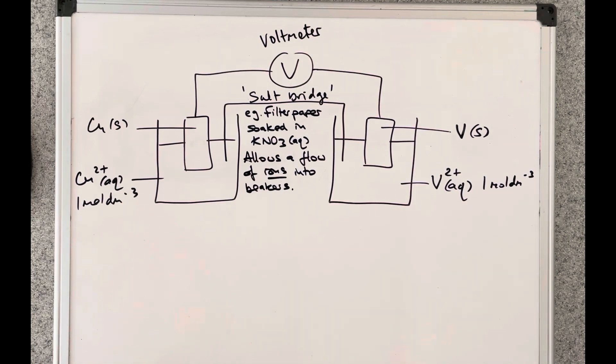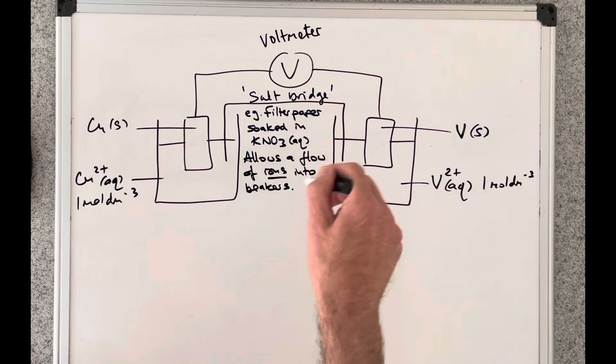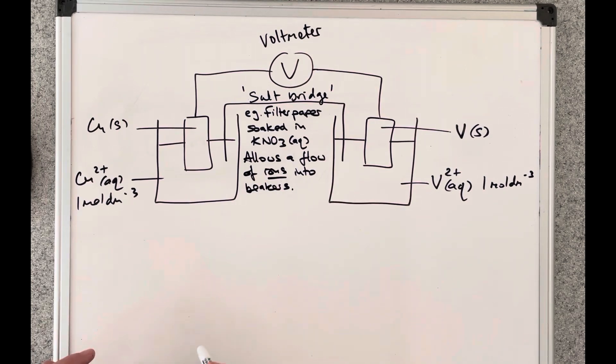Now that's all you need to know for A level about the salt bridge but if you're interested in knowing more, basically what happens is as the cell starts to operate and the electrons start to move about there's an imbalance of charge between the two beakers and if that gets too great the cell stops working. So what this flow of ions does is it addresses that and it balances out the charge imbalance.